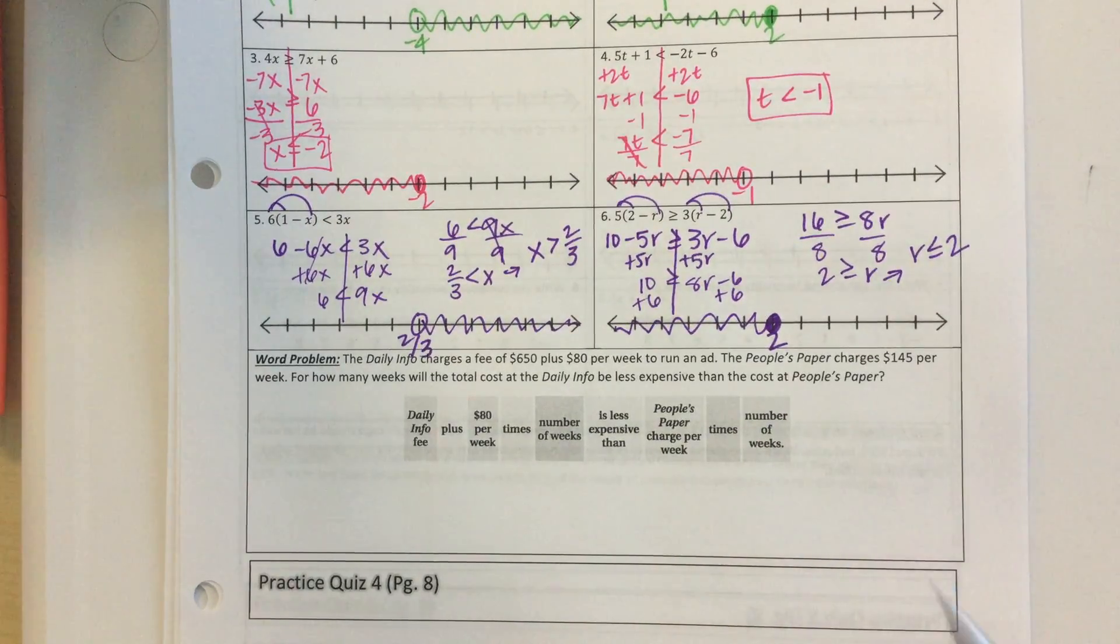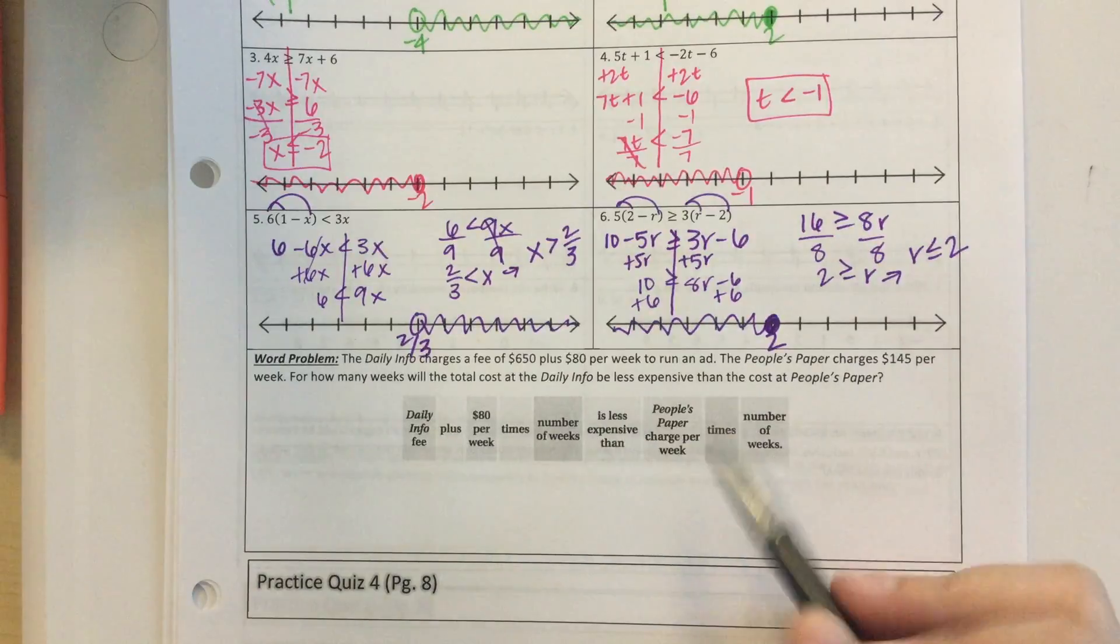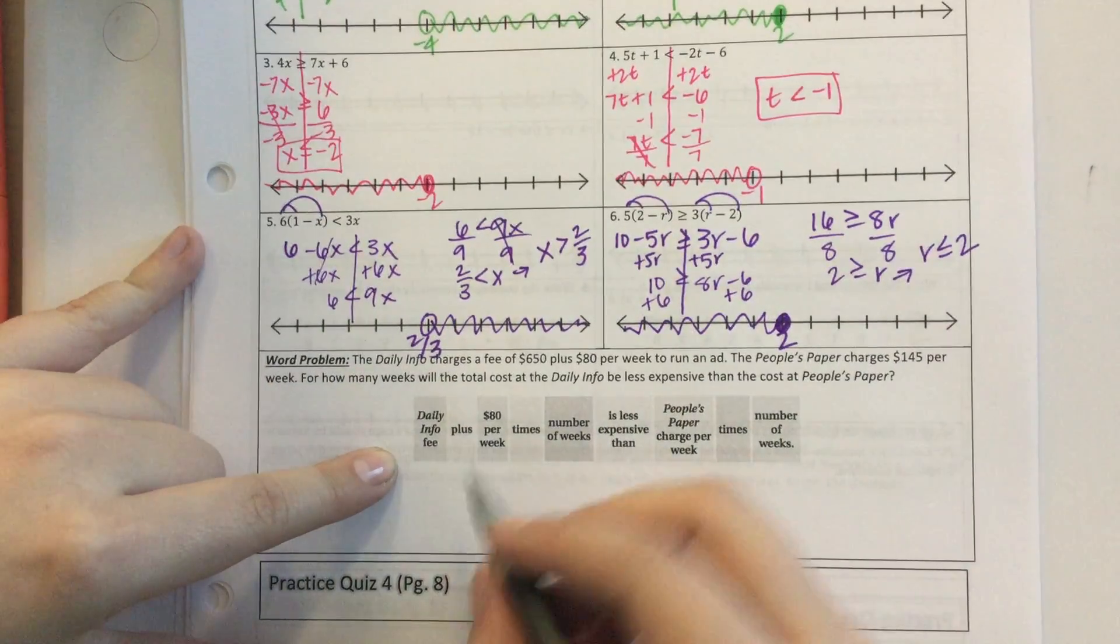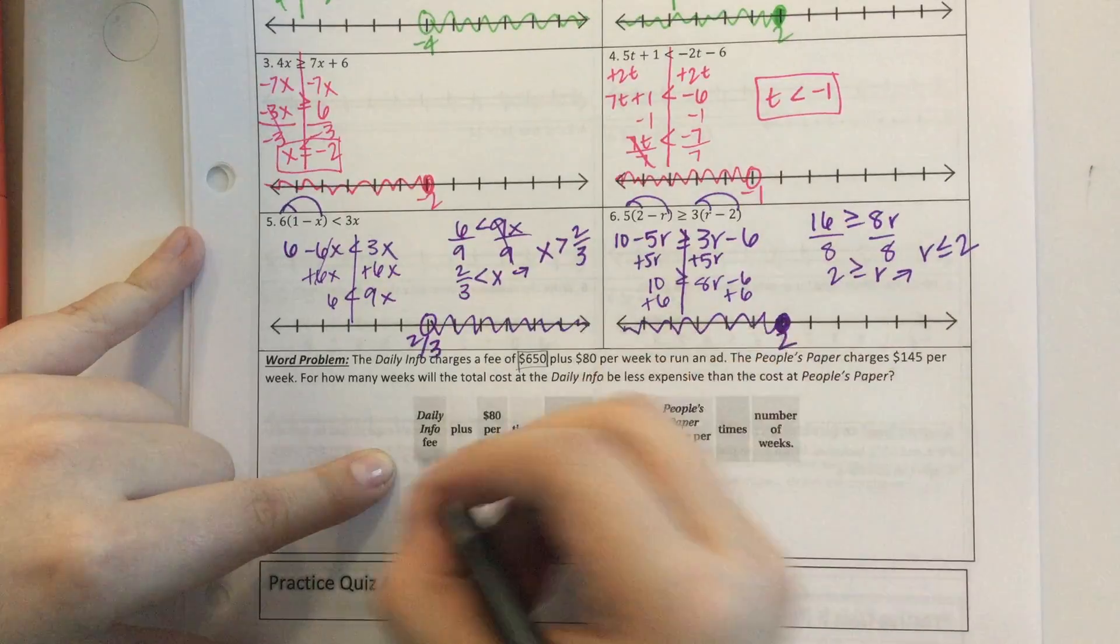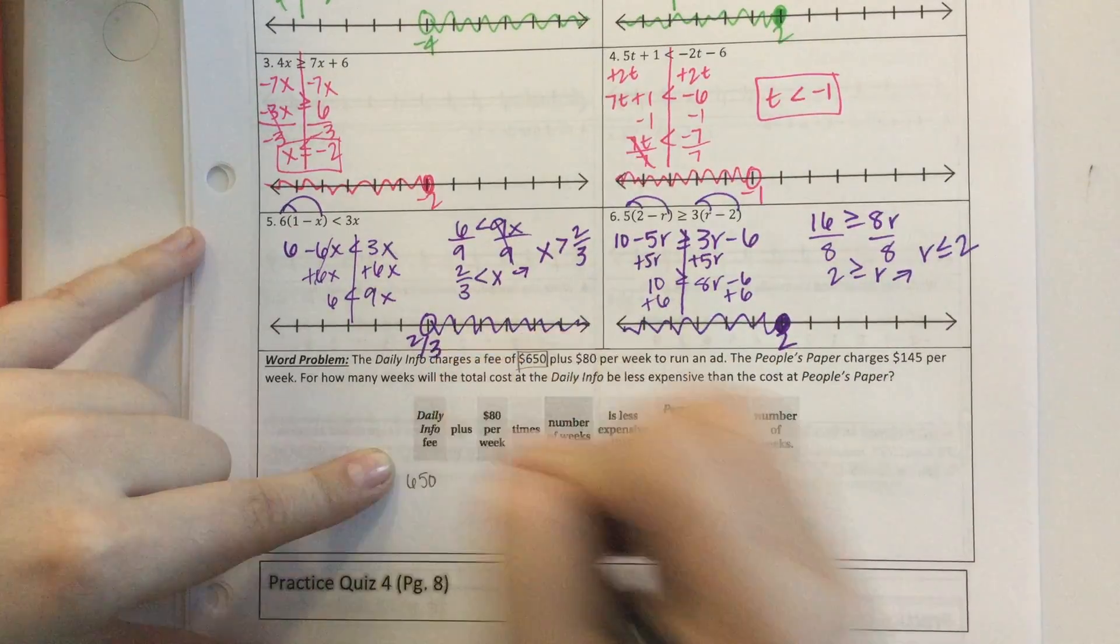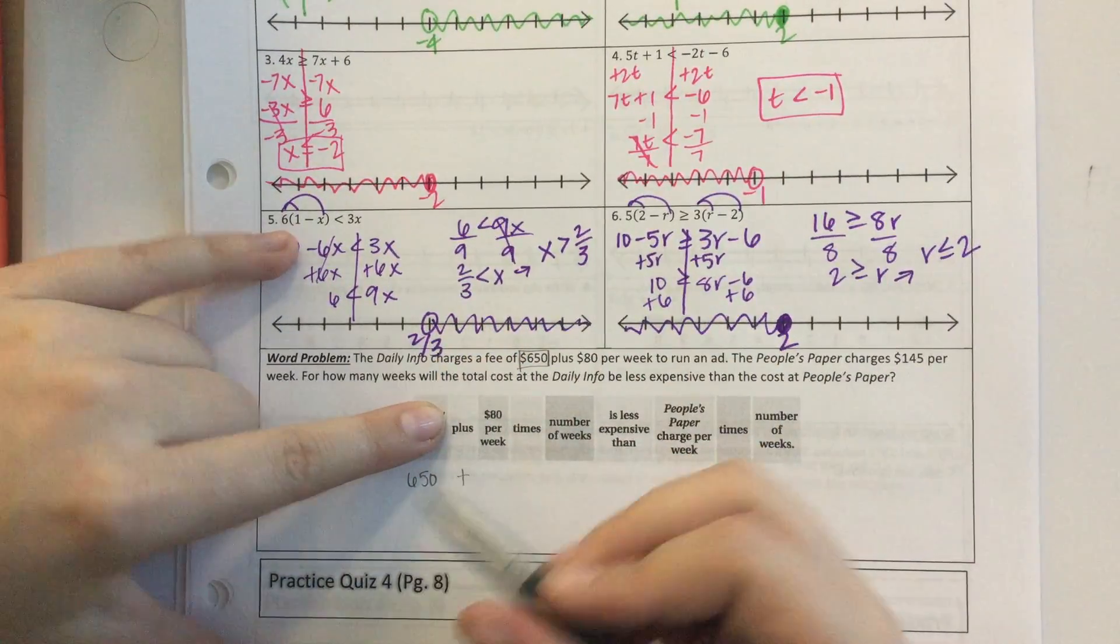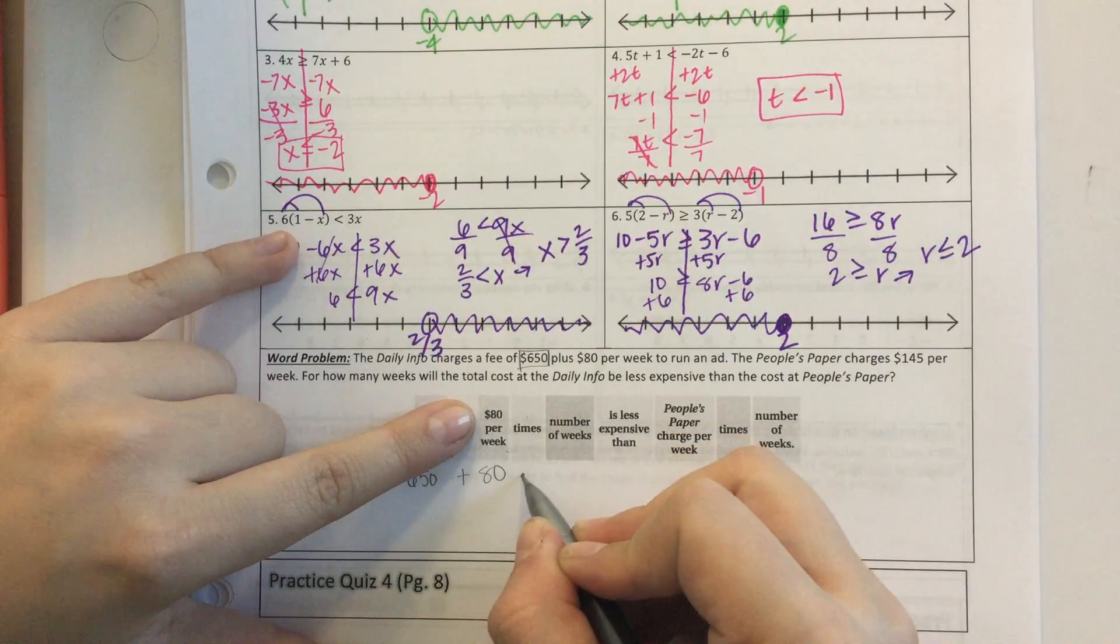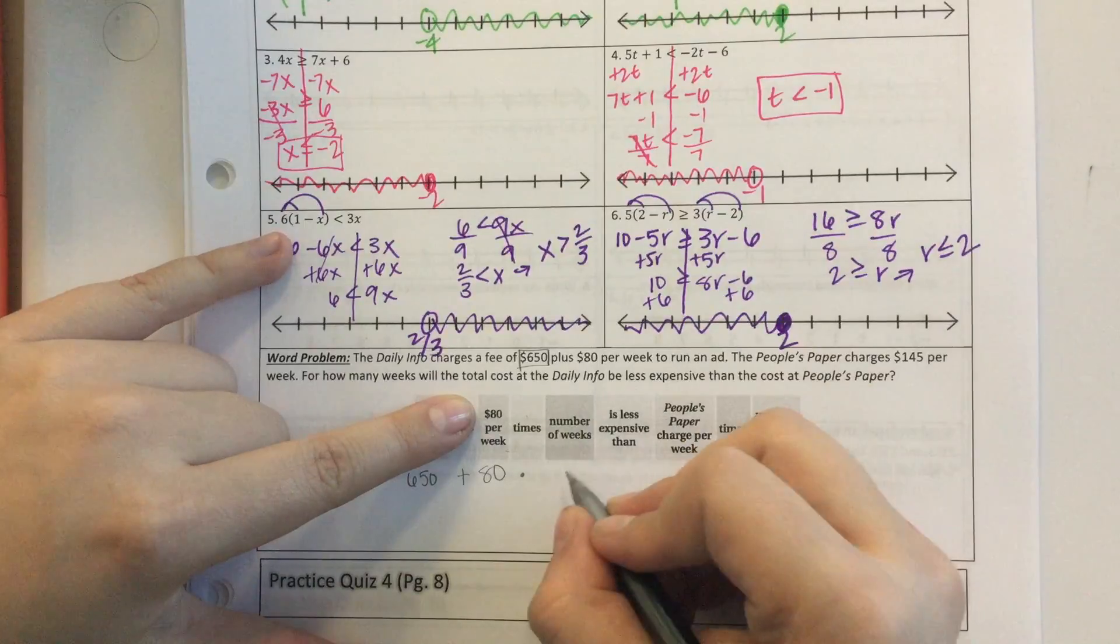So what we're going to do is break this down with these boxes here. The daily info fee - what is it? Well, it's $650 plus, that's easy, $80 per week. So 80 times the number of weeks. We don't know how many weeks, so we're going to put W.